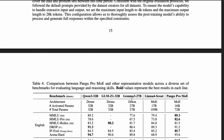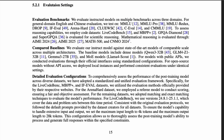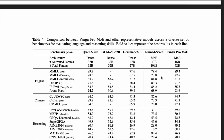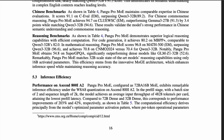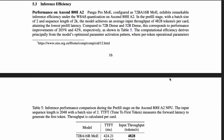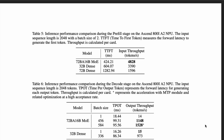With only 16 billion active parameters, this model can be more efficient during inference than the other models. Overall, whether it's the base model or the post-training fine-tuned model, it does a pretty good job across all benchmarks. Looking at inference efficiency on their own Ascend NPU hardware, there are three important metrics: TTFT (time to first token), input throughput, and output throughput.